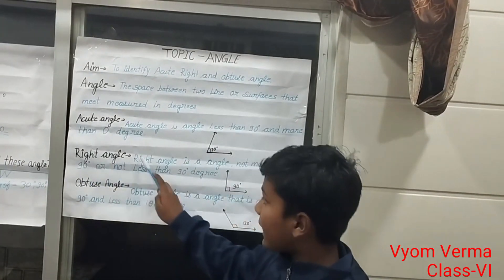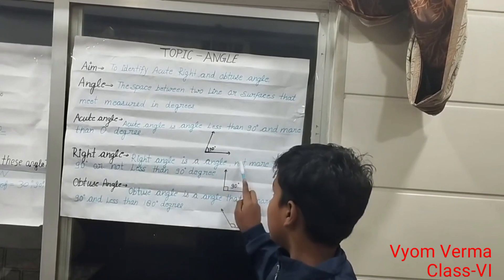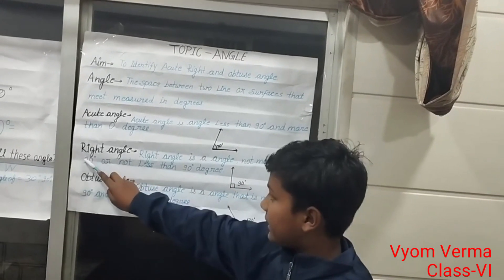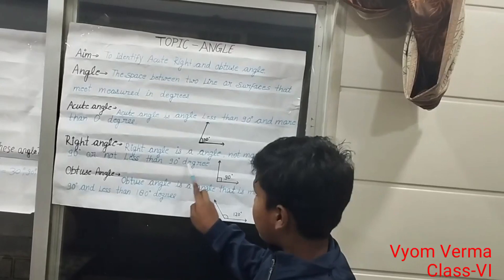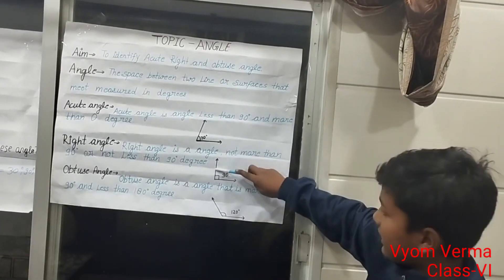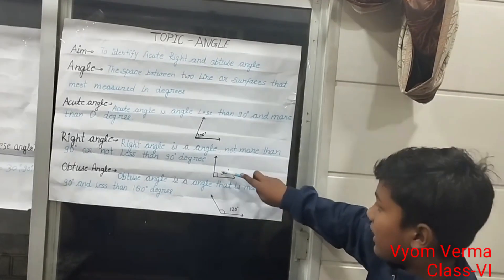A right angle is an angle that is exactly 90 degrees, not more or less. Here you can see an example of a right angle.